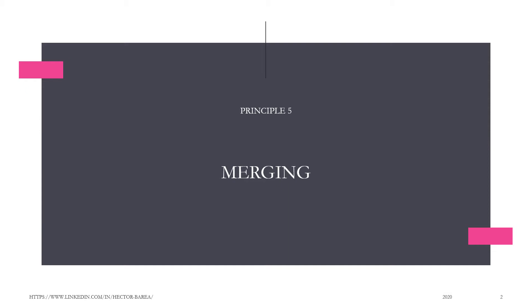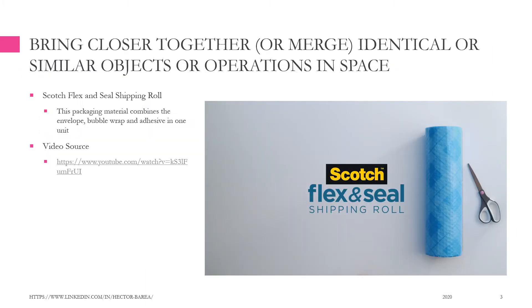Principle 5: Merging. Bring closer together, or merge, identical or similar objects or operations in space. For example, the Scotch Flex and Seal Shipping Roll. This packaging material combines the envelope, bubble wrap, and adhesive in one unit.